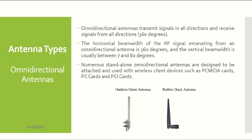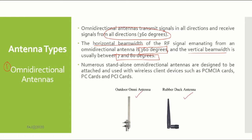There are three main types of antenna. The first one is the omni-directional antenna. An omni-directional antenna transmits and receives signals from all directions, or 360 degrees. Look at the horizontal beam width — 360 degrees — and the vertical beam width is between 7 and 80 degrees. Examples of omni-directional antennas are the outdoor omni antenna and the rubber duck antenna, which is easy to see on wireless devices, especially wireless access points.